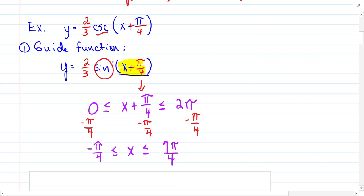There's not a number there, so it's just 2 pi. So we put this between 0 and 2 pi. We solve for x. So we're going to subtract pi over 4 from both places. We end up with negative pi over 4, less than or equal to x, less than or equal to 7 pi over 4.